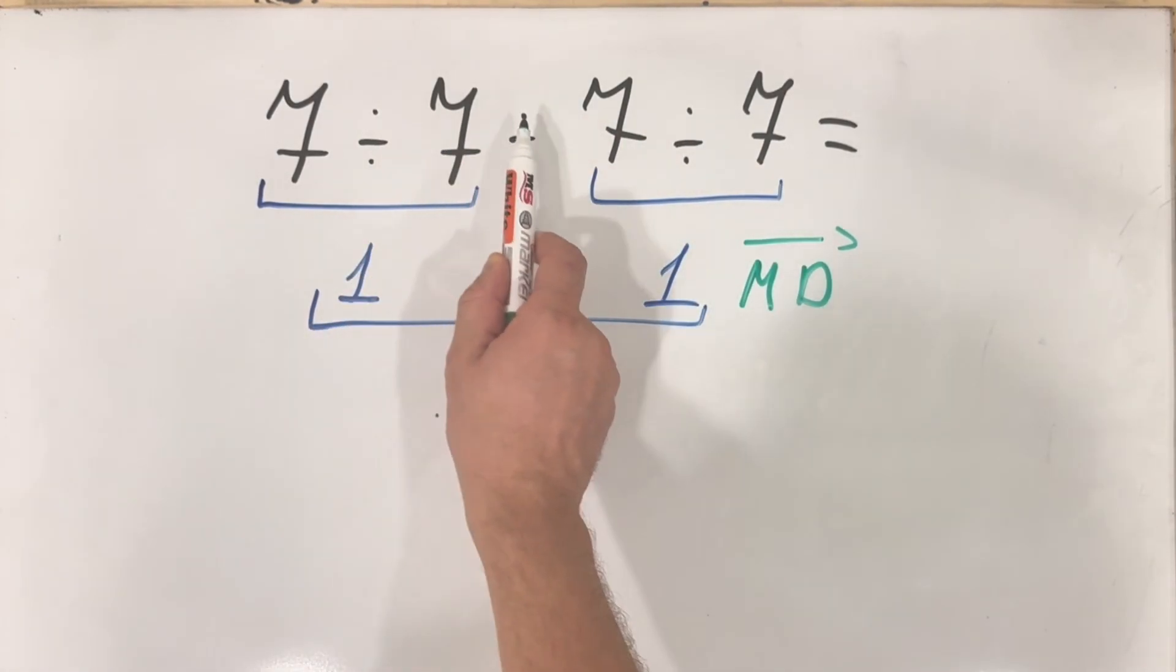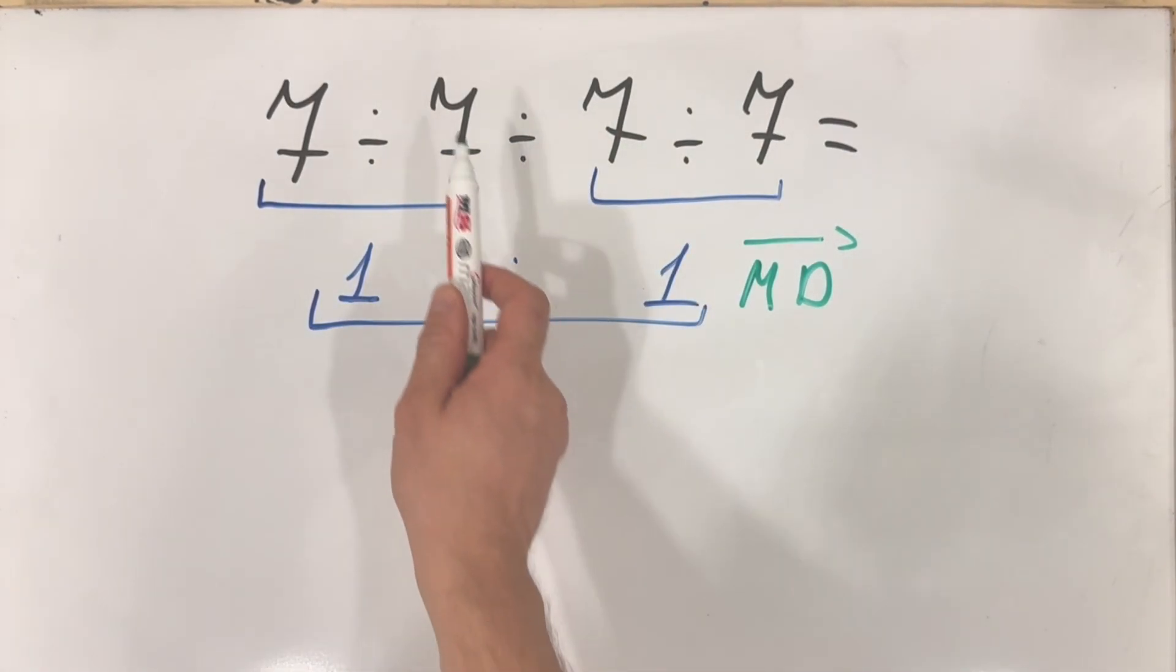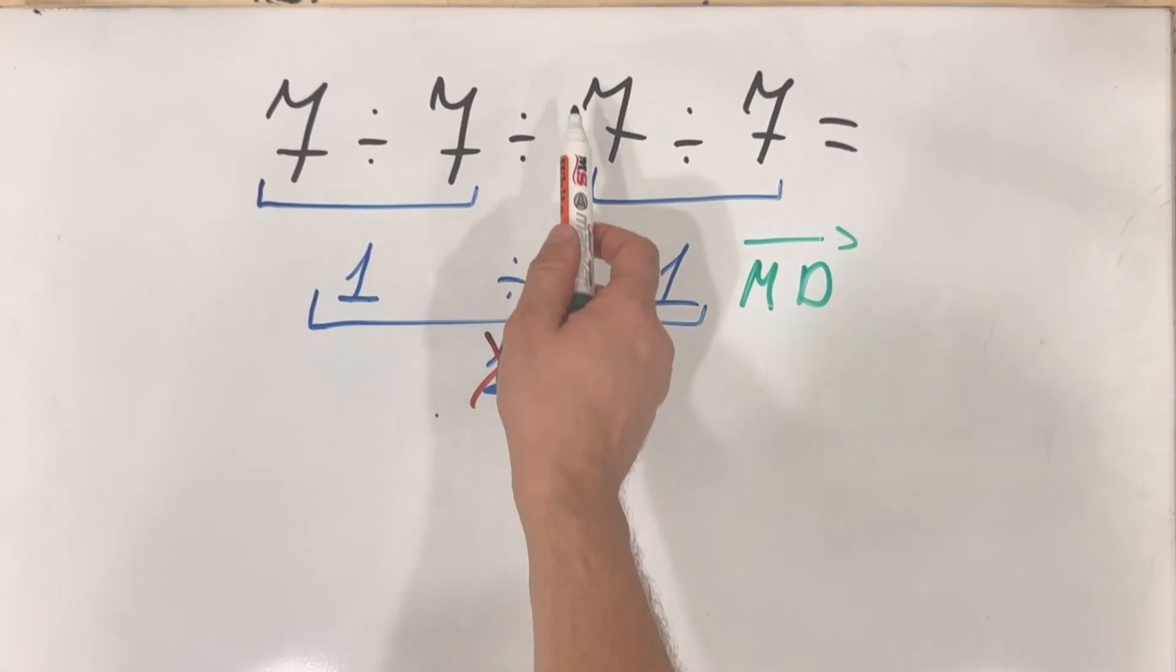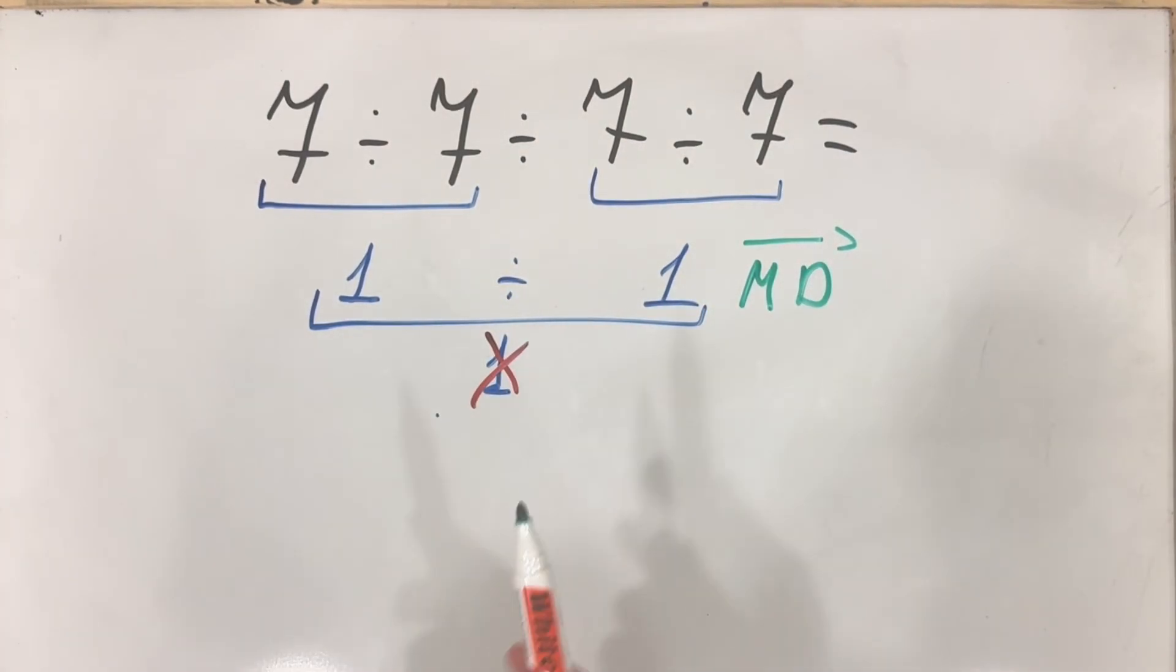So first we do this one, then this one, and then this one. If we try to combine it and then make it easier for us and then to divide, no, this is wrong.